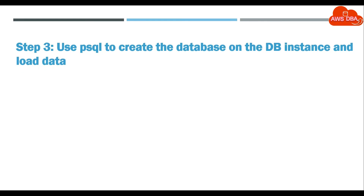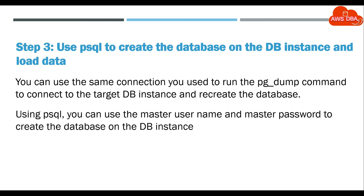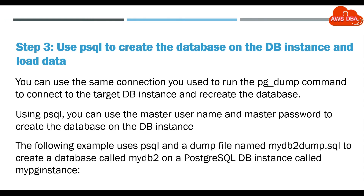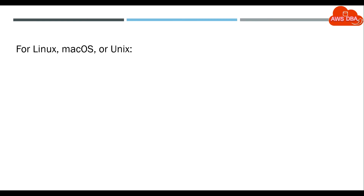Step 3: Use psql to create the database on the DB instance and load data. You can use the same connection you use to run the pg_dump command to connect to the target DB instance and recreate the database. Using psql, you can use the master user name and master password to create the database on the DB instance. The following example uses psql and a dump file named mid2dump.sql to create a database called mid2 on a PostgreSQL DB instance called mitchinstance. For Linux, macOS, or Unix.